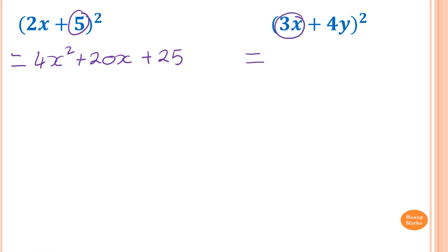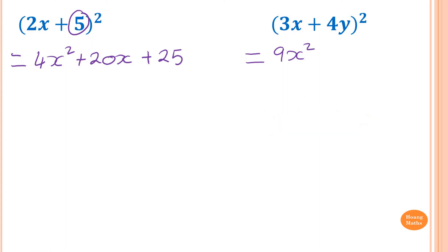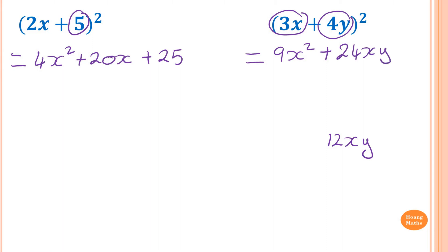To expand (3x+4y)²: square 3x first — 3x times 3x gives 3 times 3 = 9 and x times x = x², so 9x². Then 3x times 4y is 12xy, doubled gives 24xy. Then square 4y: 4² = 16 and y² gives 16y². So the result is 9x² + 24xy + 16y².